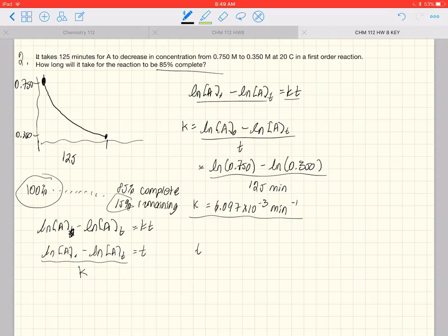And we plug in our values. So the time here is going to be the natural log of the concentration initially which is 100%. And then we are going to have 15% remaining. And we divide that by the k that we figured out, 6.097 times 10 to the minus 3 reciprocal minutes.